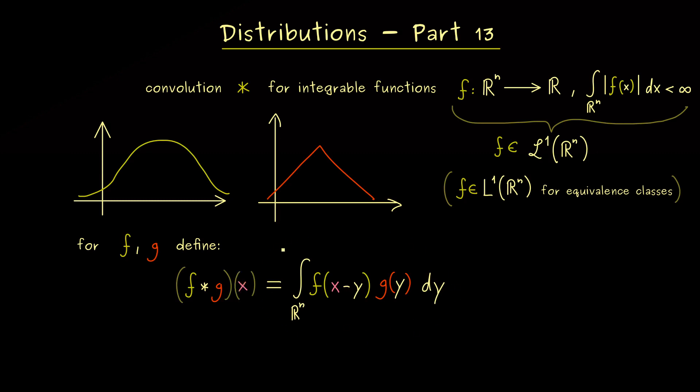And now it turns out that this integral here on the right-hand side exists almost everywhere for x in R^n. In other words, we can say that the convolution defines a new function on R^n. And indeed, this new defined function is integrable again. Moreover, if we use the notation L¹ norm for this integral here, we get a very nice estimate. So we get an inequality for these L¹ norms. We can write L¹ norm of f star g is less or equal than the L¹ norm of f times the L¹ norm of g.